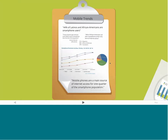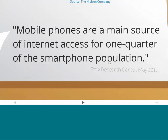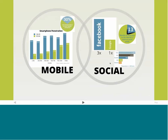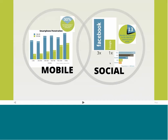Here are some stats, most taken from the Nielsen group. What's interesting is this increase in smartphone users, and even more interesting is that mobile phones are the main source of internet access for one quarter of the smartphone population. We're seeing more and more individuals purchasing smartphones, and that is becoming their main source of internet access. Looking at income level versus age, for the 55 to 64 year olds, as income increases, there's an increase in smartphone purchases.